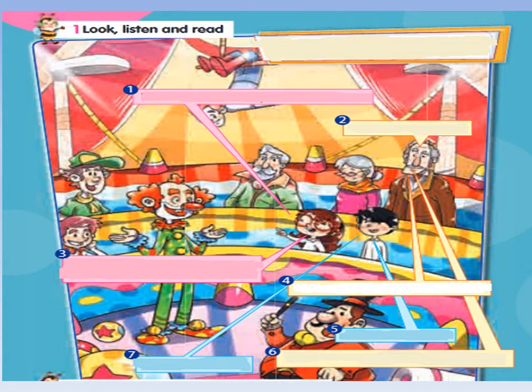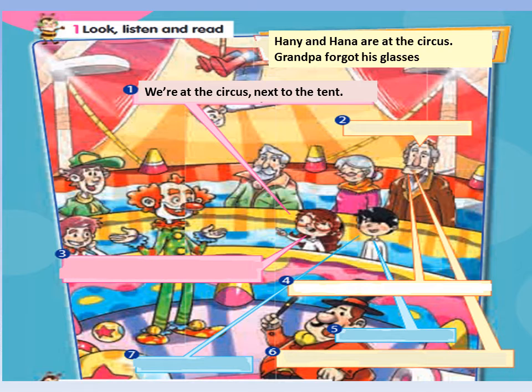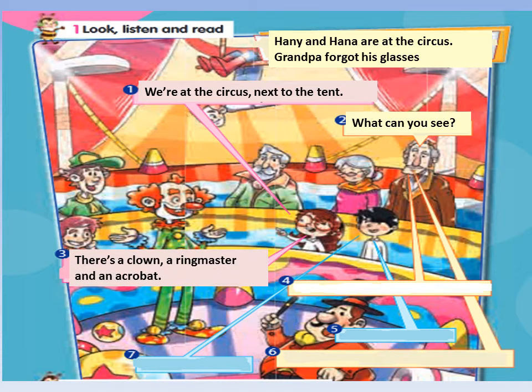Look, listen and read with me. Hany and Hana are at the circus. Grandpa forgot his glasses. We are at the circus, next to the tent. Grandpa, what can you see? There is a clown, a ringmaster and an acrobat.